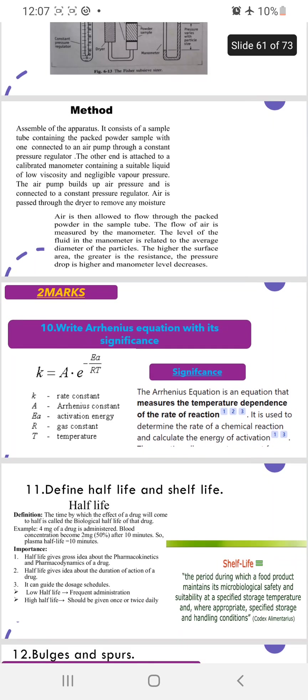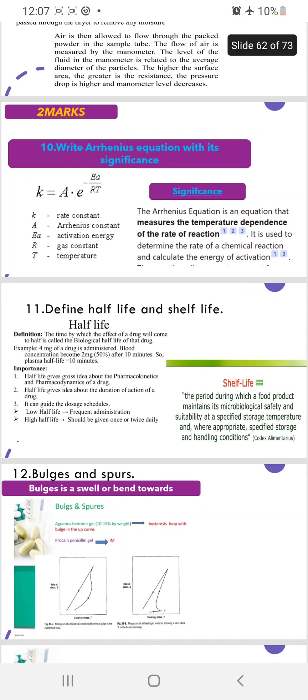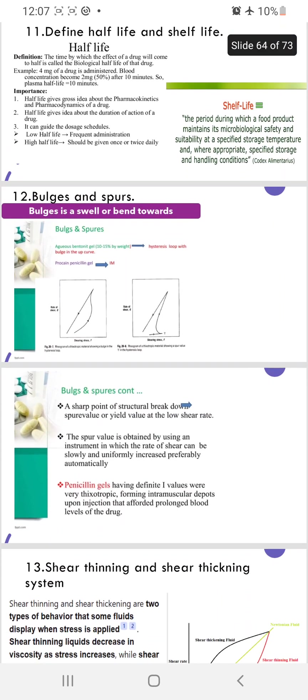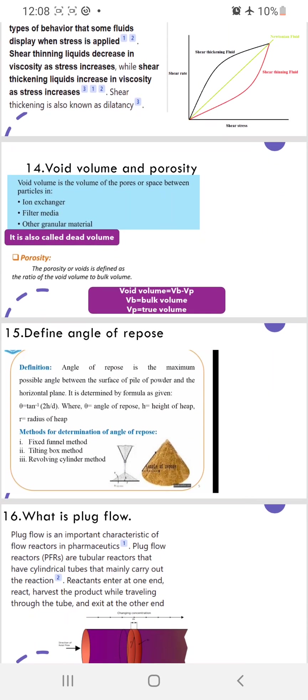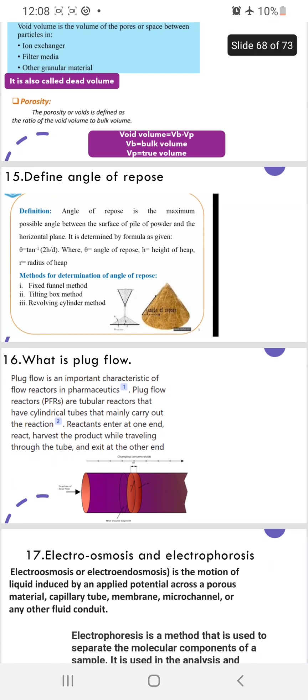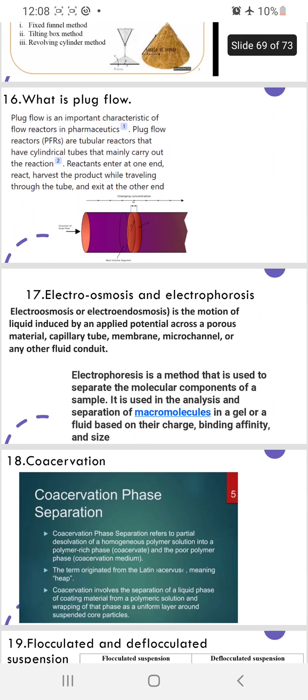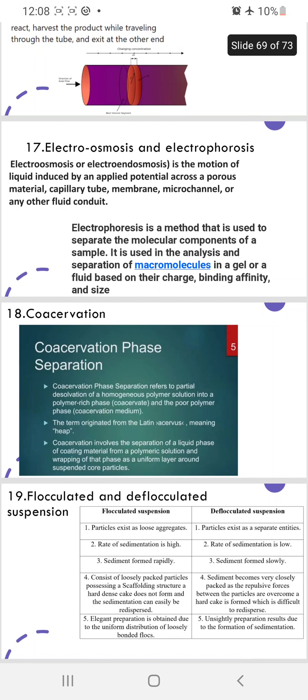Last section, two marks questions: Arrhenius equation, half-life and shelf-life, bulges and spores, shear thinning and shear thickening, void volume and porosity, angle of repose, pore volume, electro-osmosis and electrophoresis, coservation - this one is new, maybe this time also they will ask definitely. Flocculated and deflocculated - this is old, asked in five marks but now asking in two marks.